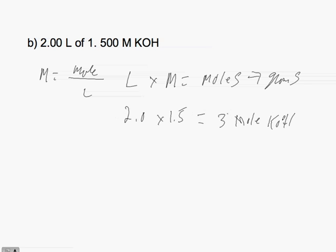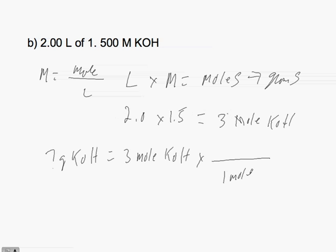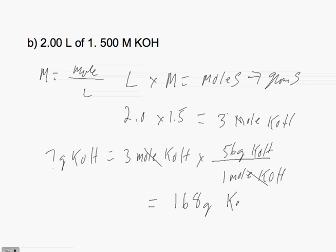Then we convert our moles of potassium hydroxide into grams. How many grams of KOH equals 3 moles of KOH? We know that for every 1 mole of KOH there are 56 grams of KOH. Moles of KOH cancel out, and the answer is 168 grams of KOH.